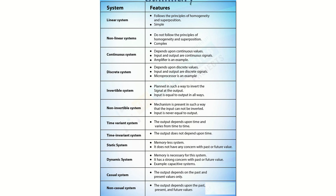Time variant systems: the output depends on time and varies from time to time. If your signal is varying along with time and the output depends on time — after delta T the output is changing — they are called time variant systems. Time invariant systems: the output does not depend on time, meaning throughout 24/7 the variable is not changing, it has nothing to do with time.